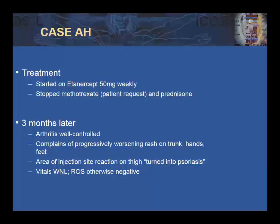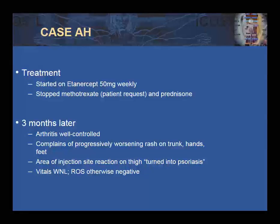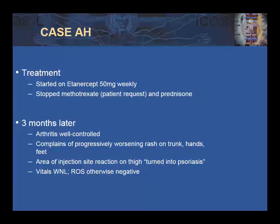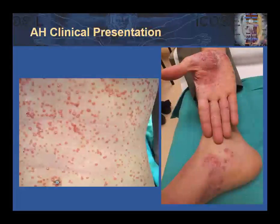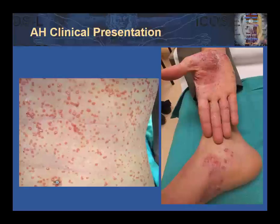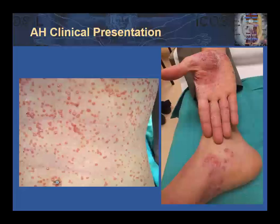However, she began to complain of a progressively worsening rash on her trunk, hands, and feet. She also noted that areas where she would inject her etanercept in the thigh would turn into what looked like psoriasis. Her vital signs were within normal limits, and review of symptoms was otherwise negative except for her skin abnormalities. On physical examination, she has a spattering of erythematous papules on the trunk, some displaying thick white scale. On her palms and soles, she developed reddish-brown macules as well as pustules that upon rupturing would develop into scaly eroded plaques.